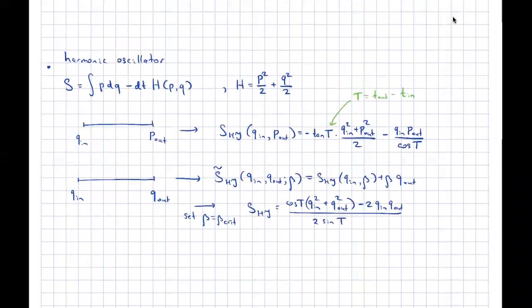I can also include some evolution in the game. For instance, the harmonic oscillator. A little computation — Mathematica can do it — is that if you fix an initial coordinate and final momentum, you need to find a solution to the equations of motion and evaluate the action there. It will be some quadratic expression in terms of the initial coordinate and final momentum. Sometimes it explodes depending on the time that has passed between the two moments — when there's a problem with existence and uniqueness.